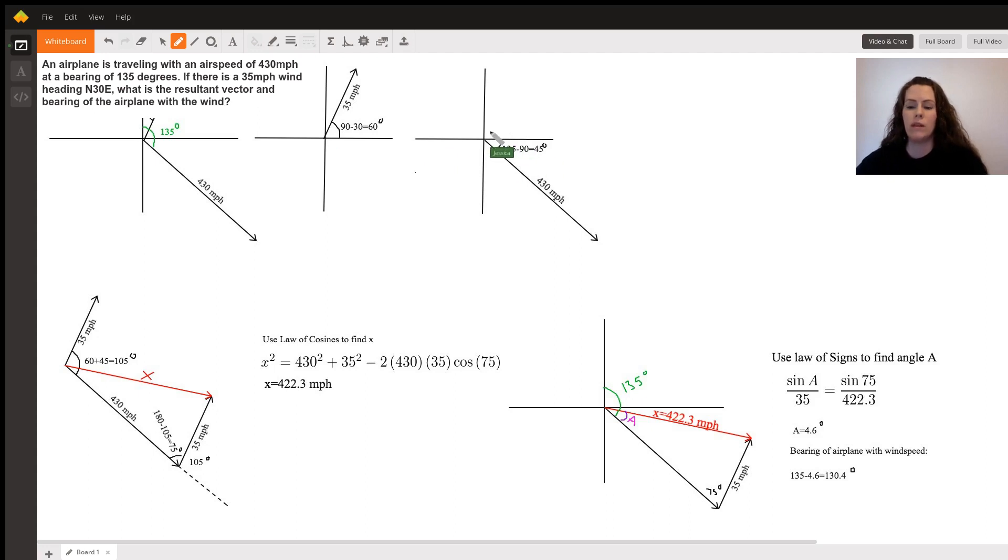We can do the same thing with the airplane vector. We know that from north down to the vector is 135 degrees, and since this quadrant is 90 degrees, we can subtract that out and we get that this angle down here is 45 degrees.